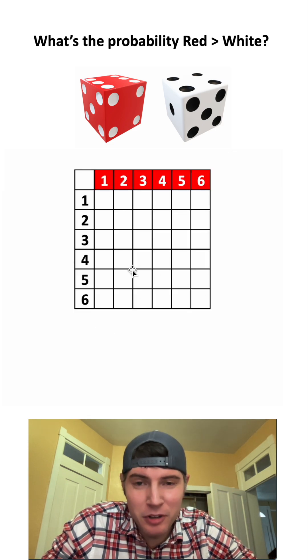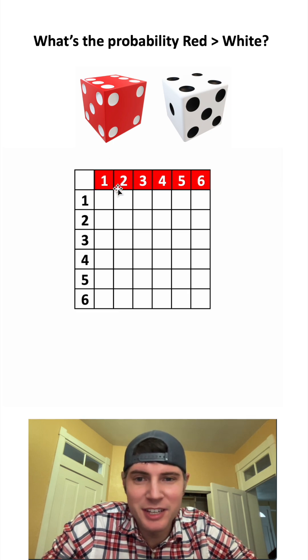In order to solve this, let's make a table of all the possible situations. The red one can be any number between 1 and 6, and the white one can be any number between 1 and 6.